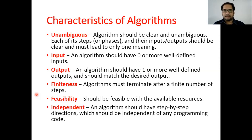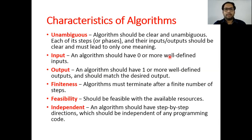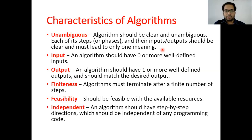Now let's discuss the characteristics of an algorithm — it is very important to know what characteristics your algorithm should have. First is unambiguous: an algorithm should be clear and unambiguous. Each of its steps or phases and their inputs and outputs should be clear and must lead to only one meaning. There should be clear meaning in whatever you write as a step.